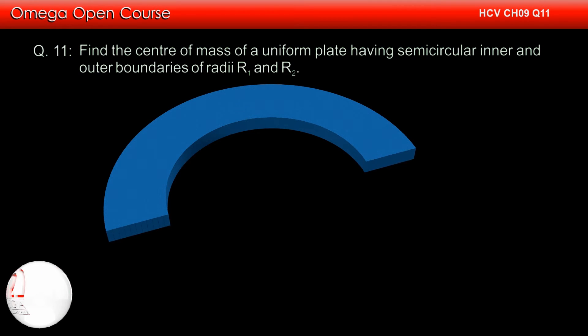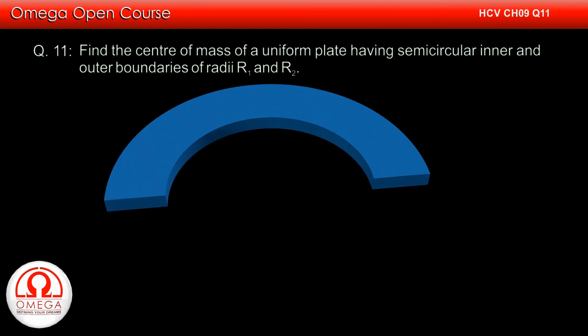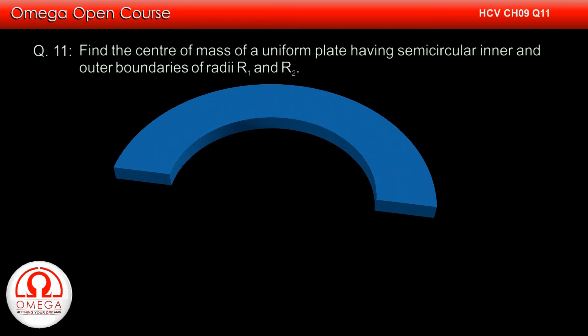Find the center of mass of a uniform plate having semicircular inner and outer boundaries of radii R1 and R2.